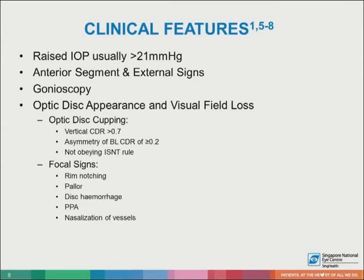In open angle glaucoma, clinical features to note include a raised intraocular pressure, usually more than 21 millimeters of mercury, external and anterior segment signs, as well as gonioscopy findings, and the optic disc appearance, which can be divided into generalized and focal signs. With regards to optic disc cupping, features include a vertical cup disc ratio of more than 0.7, asymmetry of cup disc ratios of 0.2 and above, and that the ISNT rule is not being obeyed. Focal signs include rim notching, disc pallor, disc hemorrhages, peripapillary atrophy, and nasalization of the vessels.